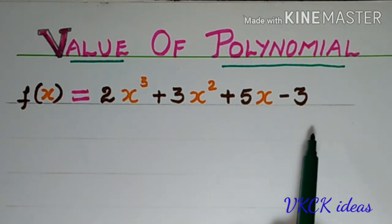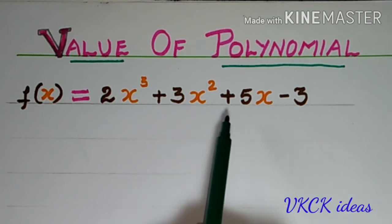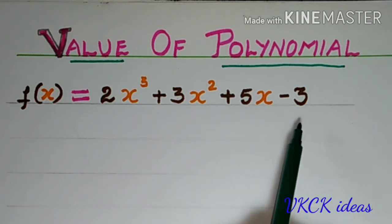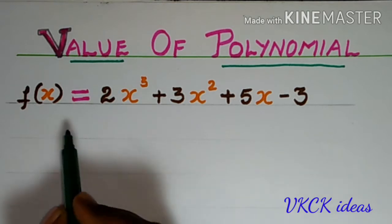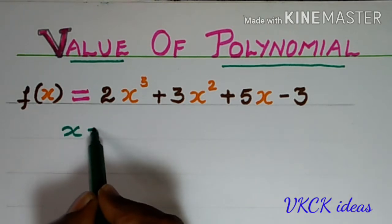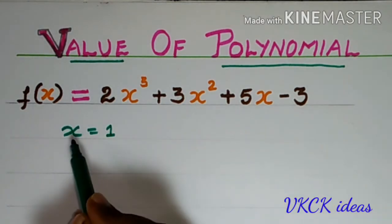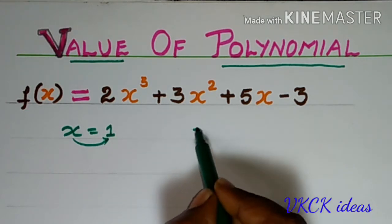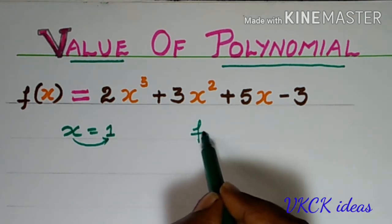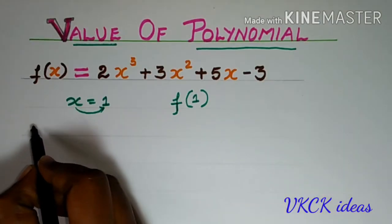We shall take a polynomial f(x) = 2x³ + 3x² + 5x - 3. In order to find the value of the polynomial, we shall consider x = 1. Now, what we should do? We have to replace x by 1. That is, we will be finding out the value of f(1).